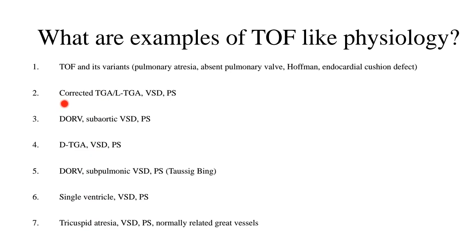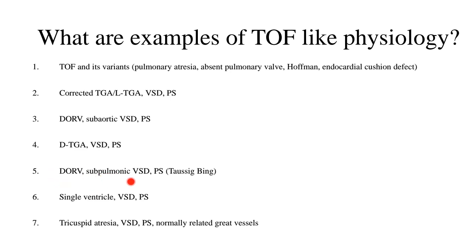The six other examples are: number one, corrected TGA (L-TGA, corrected transposition of great arteries) with VSD and PS; number two, double outlet right ventricle (DORV) with a sub-aortic VSD and PS; number three, complete TGA (D-TGA, D-transposition of great arteries) with VSD and PS; number four, another type of DORV with a sub-pulmonic VSD and PS, known as the Taussig-Bing anomaly; number five, single ventricle with VSD and PS; and number six, tricuspid atresia with VSD and PS in which the great vessels are normally related.